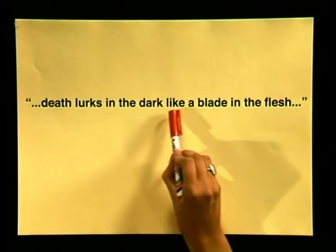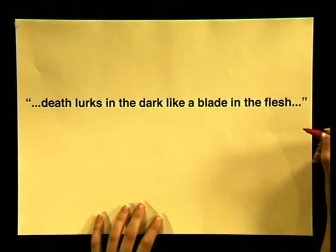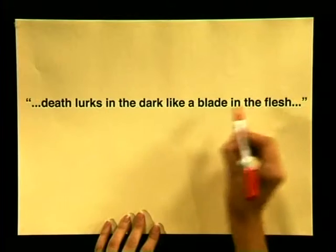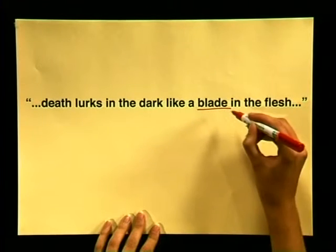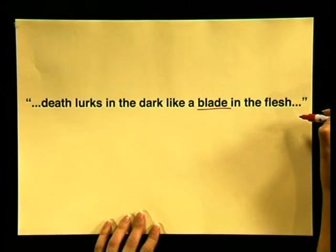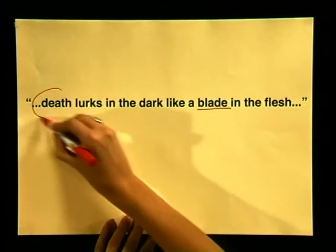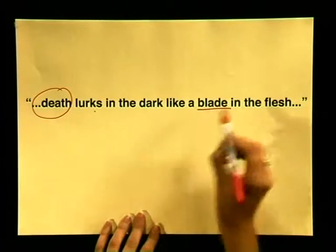To illustrate a simile, let's look at this line from the poem 'City Johannesburg.' Do you see the comparison here? Death is compared to a blade here. So the poet has used a threatening object — the blade in the flesh — to compare to death. Do you see that there is almost a double threat here? Death that waits or lurks, and the knife. From our definition, we know that this is a simile because it uses the word 'like' to draw the comparison.